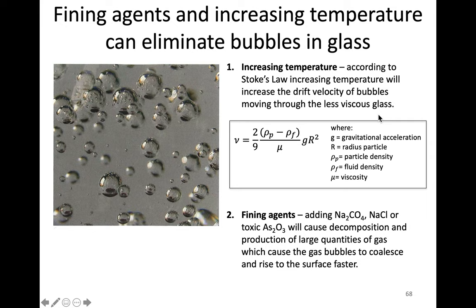This is according to Stokes' law. By increasing the temperature, we increase the drift velocity of bubbles moving upward against gravitational force. So temperature goes up, viscosity goes down, and bubbles are able to move more freely to the surface and be eliminated. In that continuous furnace, we can set the profile such that we increase the temperature and remove bubbles from forming.